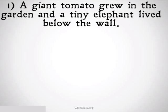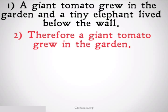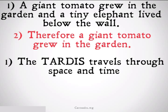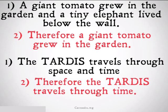I take the premise: a giant tomato grew in the garden and a tiny elephant lived below the wall. I can conclude from this that, therefore, a giant tomato grew in the garden, because that is one of the two parts of my conjunction. Another example: the TARDIS travels through space and time. I can conclude from this that the TARDIS travels through time, because it's one of the parts of my conjunction.